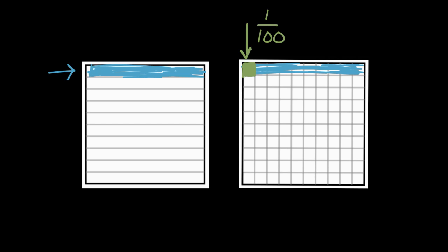A tenth of a tenth is a hundredth. Because when you divide 10 into 10 equal pieces, you're gonna end up with 100 pieces. So a tenth of a tenth is a hundredth.